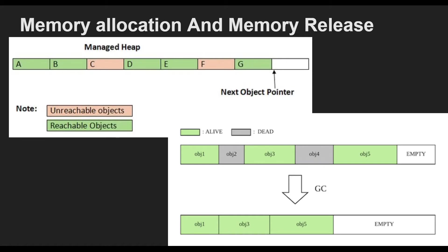Objects that are not in the graph are unreachable from the application's roots. The garbage collector considers unreachable objects garbage and releases the memory allocated for them. During a collection, the garbage collector examines the managed heap, looking for blocks of address space occupied by unreachable objects. As it discovers each unreachable object, it uses a memory copying function to compact the reachable objects in memory, freeing up the blocks of address space allocated to unreachable objects. Once the memory of the reachable objects has been compacted, the garbage collector makes the necessary pointer corrections so that the application's routes point to the objects in their new location. It also positions the managed heap pointer after the last reachable object. Memory is compacted only if a collection discovers a significant number of unreachable objects. If all objects in the managed heap survive a collection, there is no need for memory compaction.